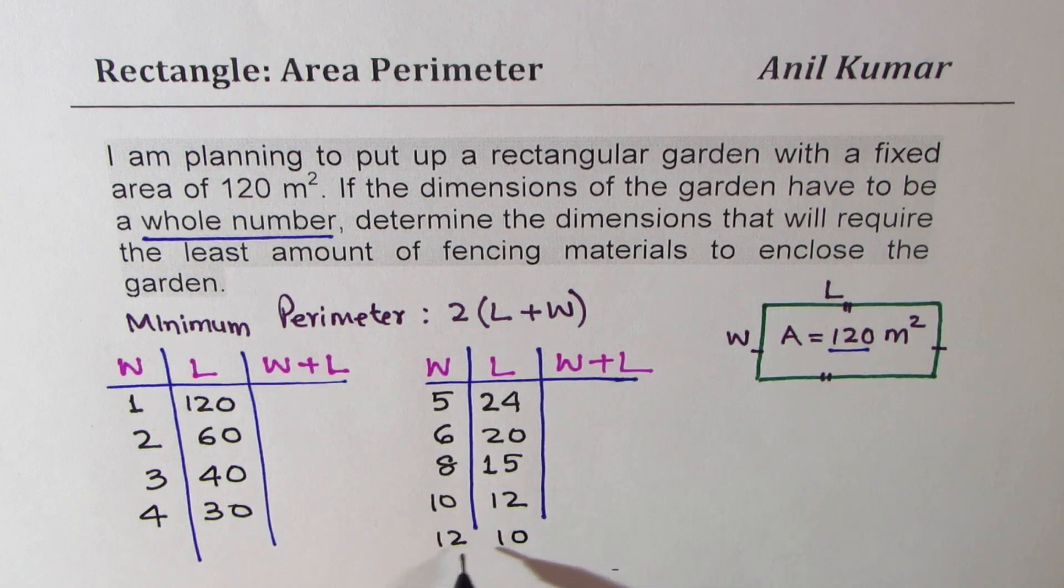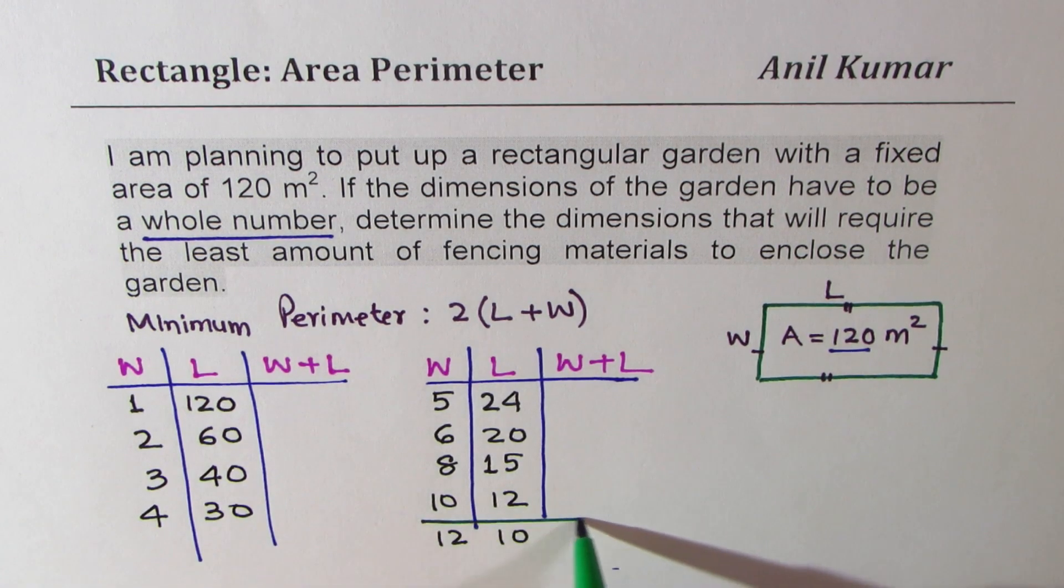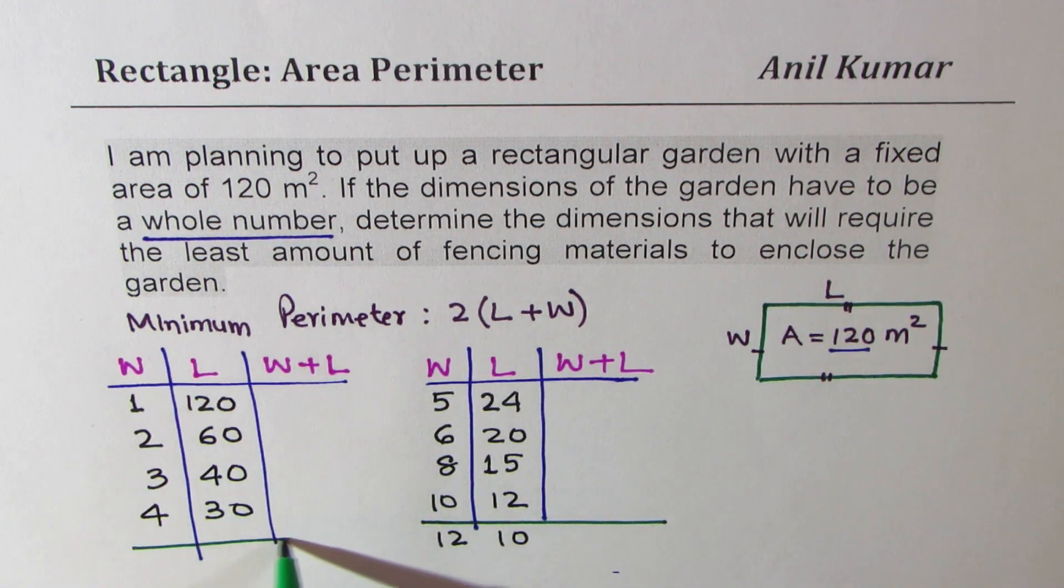So with 12, we get 10, and then we'll repeat these numbers. So basically, we have to only check up to this point. Is that clear? So these are the only values which you have to try. It doesn't take much time.